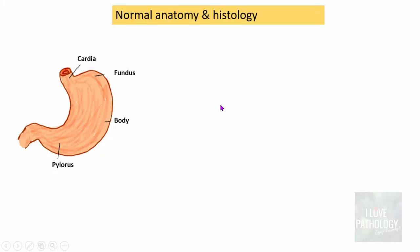Now let us see the normal anatomy and histology of the stomach. As we all know, the stomach is divided into four parts: the cardia, fundus, body, and the pylorus. If you cut open the stomach, what you see is the gastric rugae and then depressions. These depressions in the stomach mucosa are called gastric pits, and the deeper parts of these pits are nothing but the gastric glands.